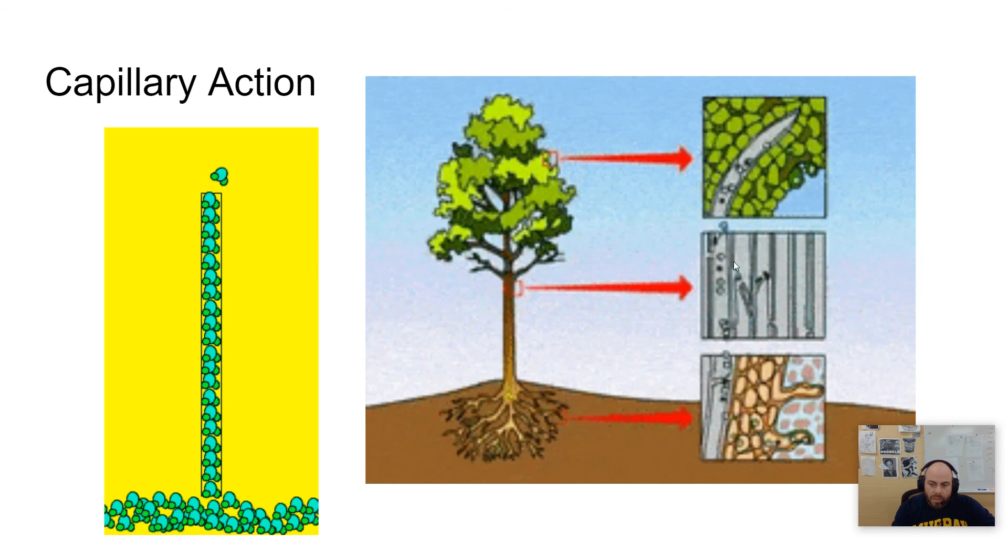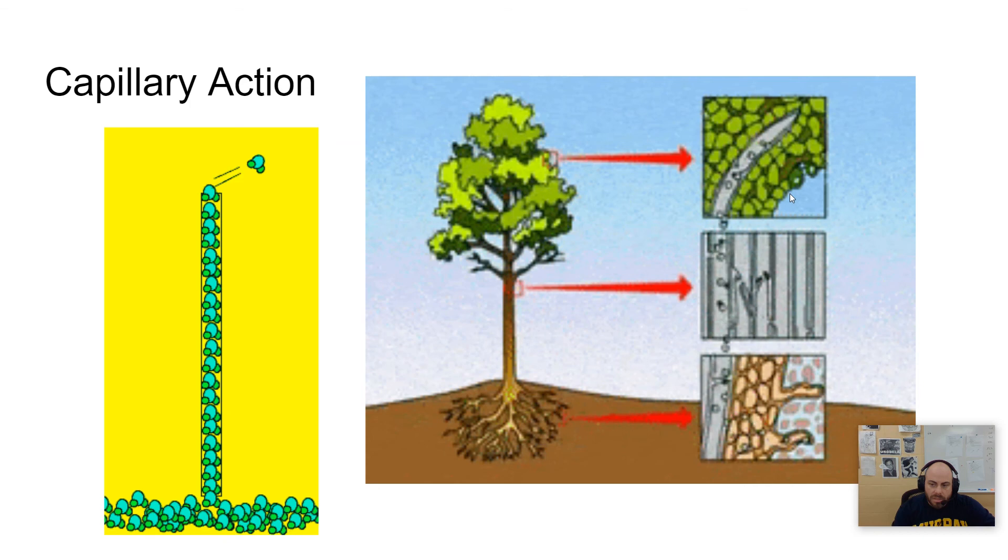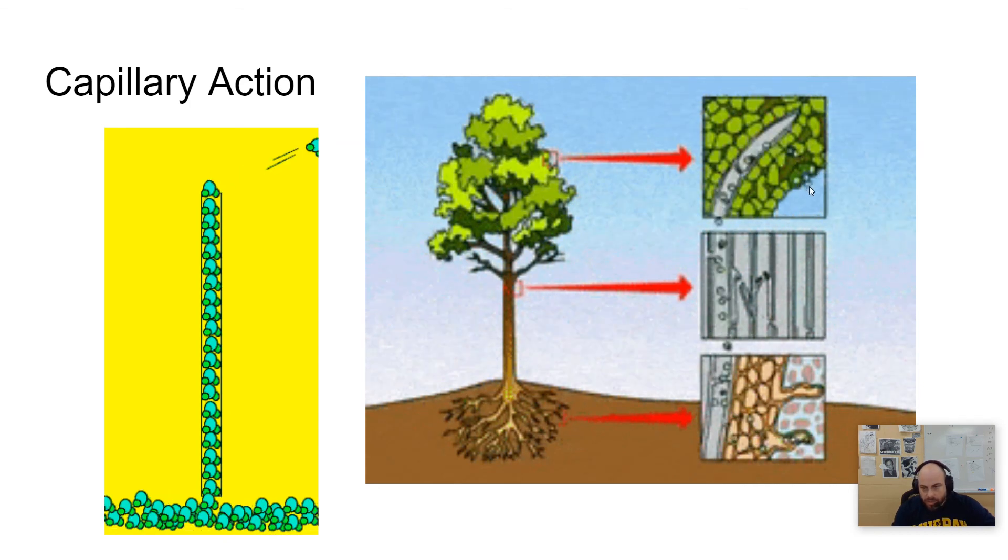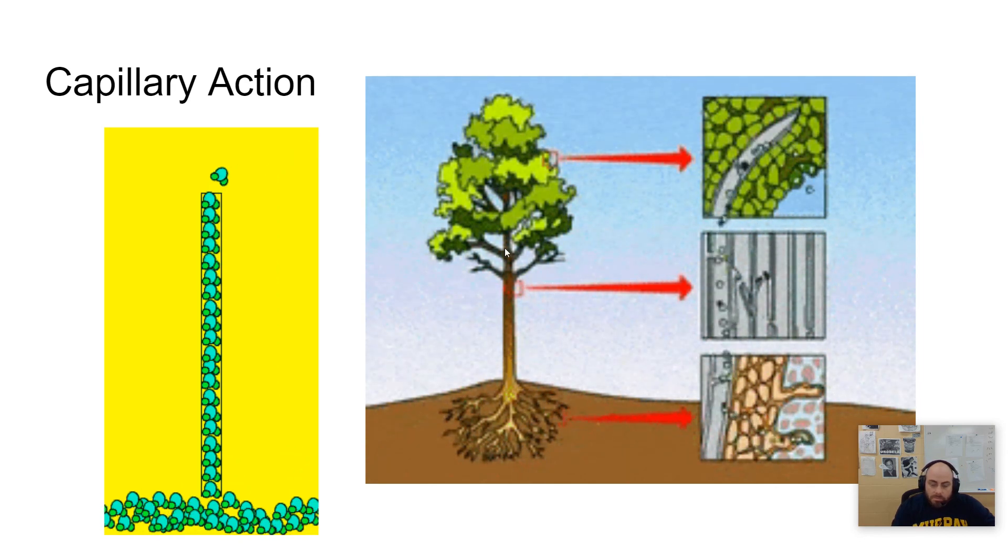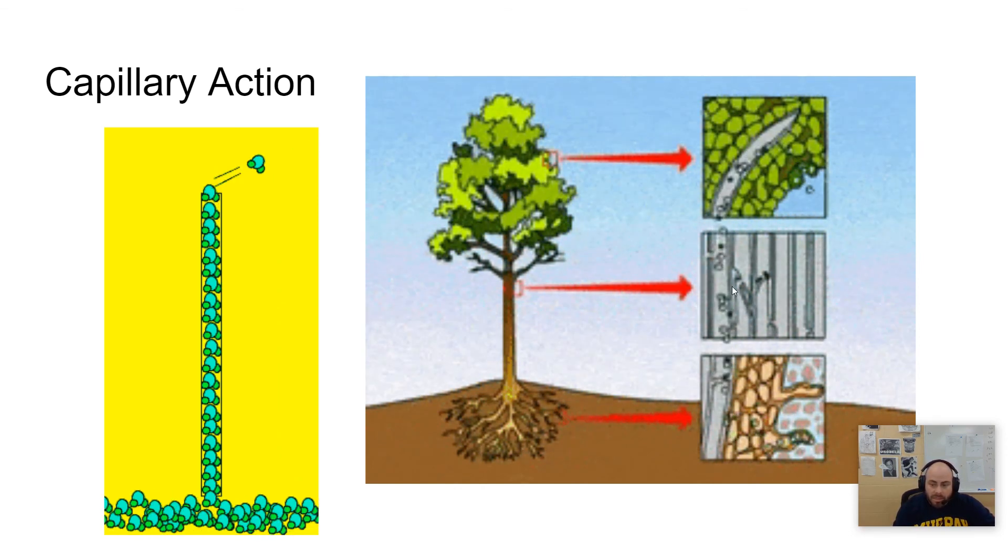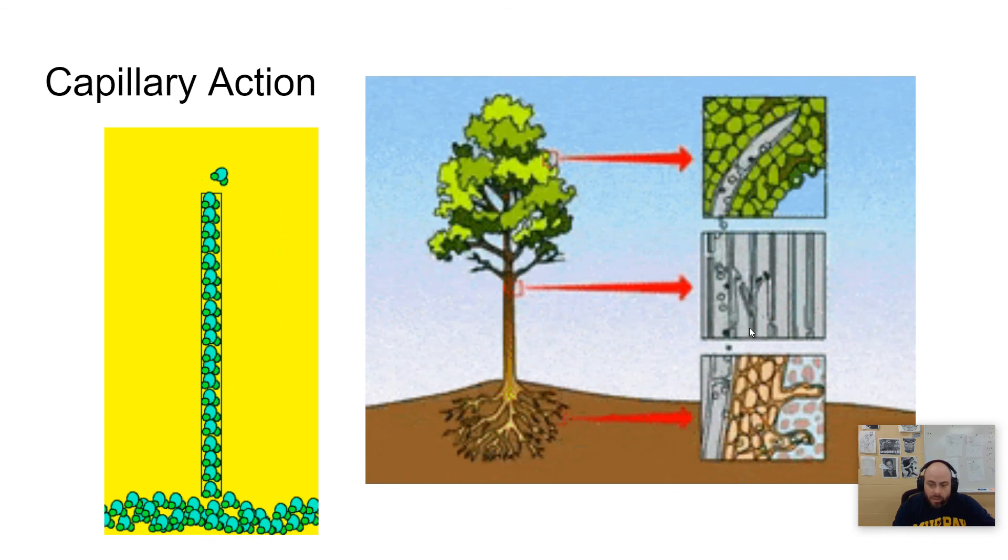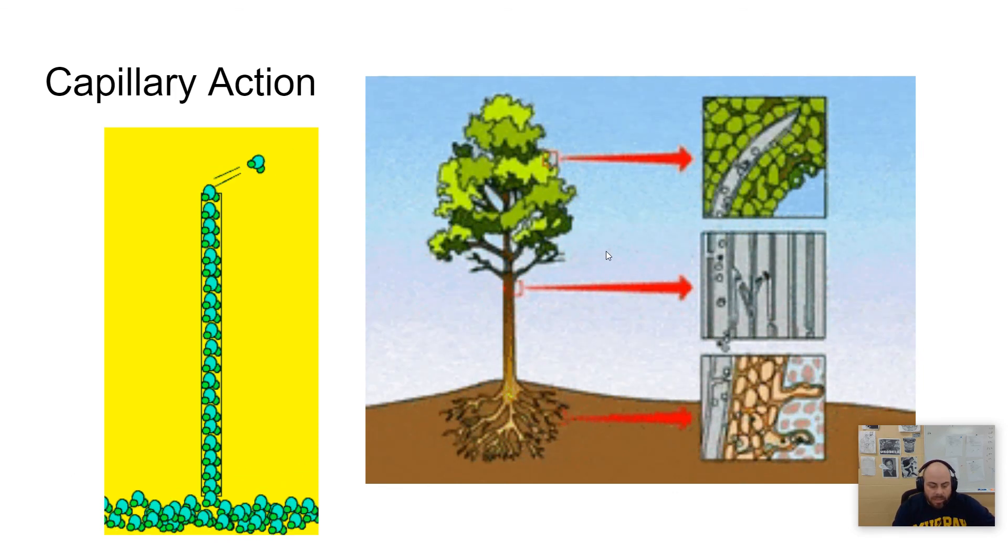And it will climb up those tubes all the way to the leaves. And it's being pulled out of the leaves by evaporation through a process called transpiration. And so as it's being pulled out of the leaves, it's being pulled up the tree, up to several hundred feet, because some trees can be hundreds of feet. And this is the only way that is able to happen is through this capillary action that is found inside the plant cells.